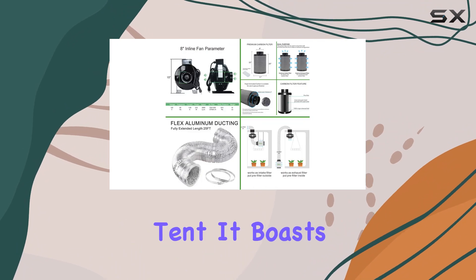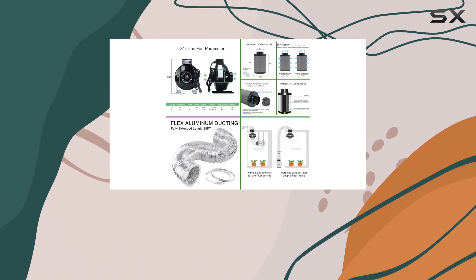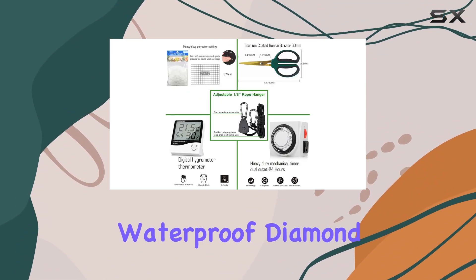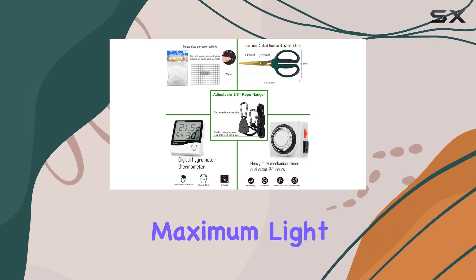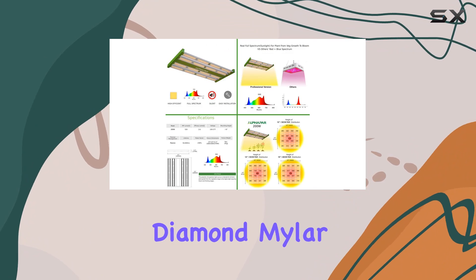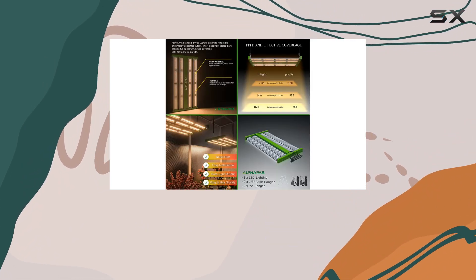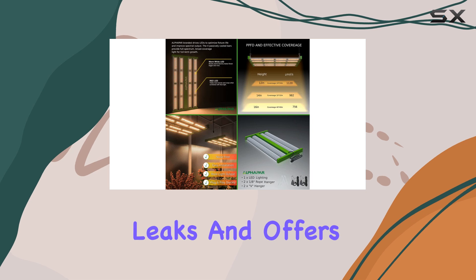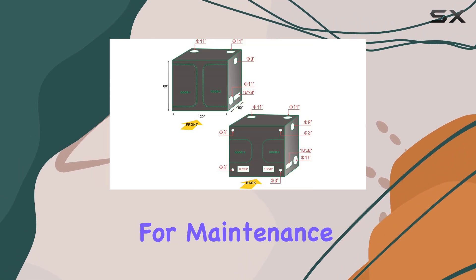Let's start with the grow tent. It boasts 96% highly reflective waterproof diamond Mylar, ensuring maximum light distribution and retention. The 600D high-reflective diamond Mylar construction, coupled with heavy-duty zippers and double stitching, prevents light leaks and offers easy access for maintenance.